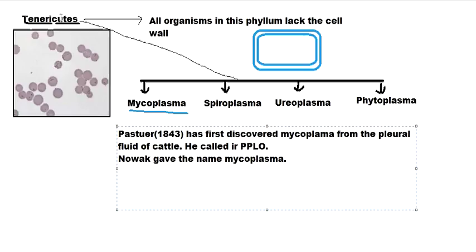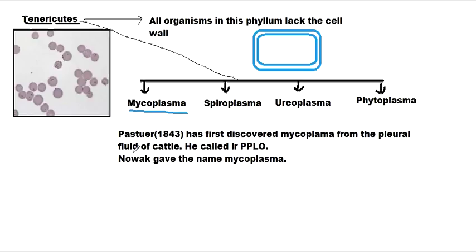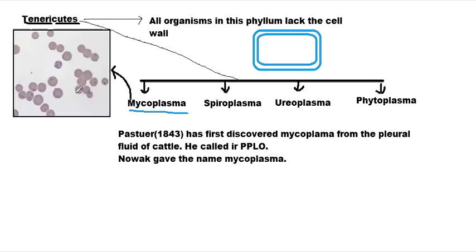As we know, they lack the cell wall. They are typical colonial in appearance — these colonies of Mycoplasma shown in the picture are not large colonies but colonies are formed. They can filterably pass through 450 nanometer bacterial filters.